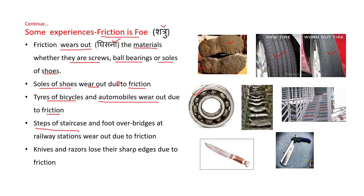Steps of staircases and footbridges at railway stations wear out due to friction — you can see these worn-out steps. Knives and razors lose their sharp edges due to friction. If you use them continuously, their sharpness is lost.